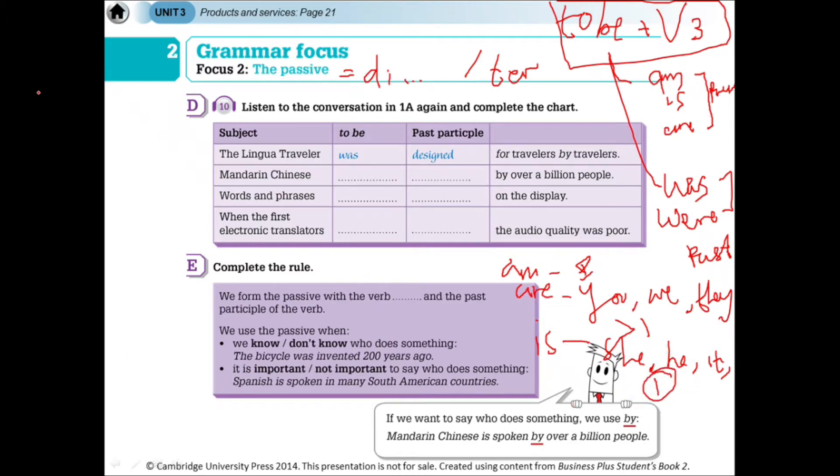Tapi kalau yang was sama were, bagaimana? Kalau to be-nya was atau were, itu adalah untuk di masa lalu. Kalau was, itu hanya untuk I, untuk she, untuk he, dan untuk it, atau bendanya atau orangnya hanya ada satu. Kalau were, itu untuk siapa? Untuk you, untuk we, untuk they, atau yang lebih dari satu. Itu untuk to be-nya.